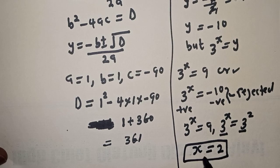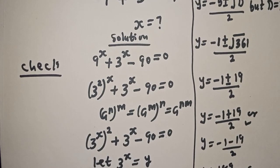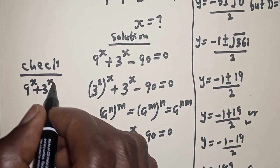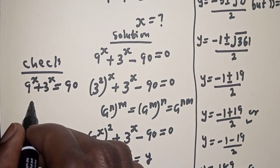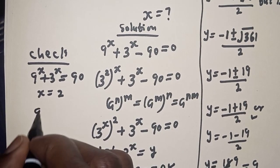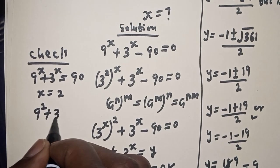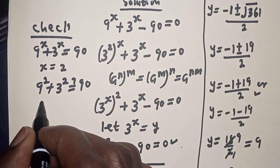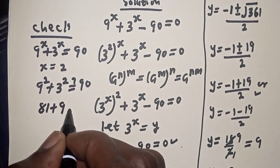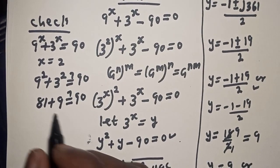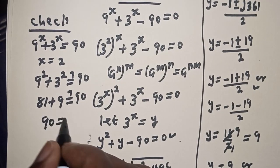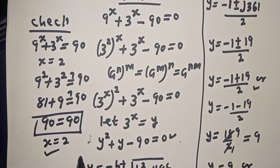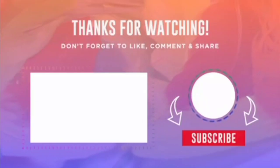This is the value of s. We can check to confirm if our answer is right. Given the equation 9 raised to power s plus 3 raised to power s equals 90, when s equals 2 we have 9 squared plus 3 squared, which is 81 plus 9, equal to 90. This satisfies the given equation at s equals 2. If you enjoyed the class, please don't forget to like, share, comment and subscribe. Thank you.